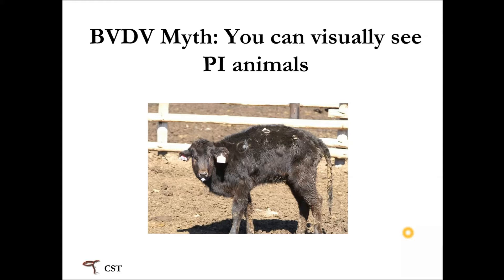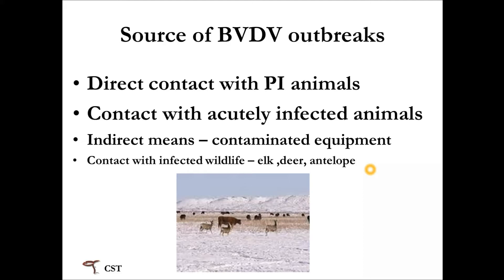One of the biggest myths is that you can visually look at an animal and tell it is PI. The animal shown here was persistently infected, but we very seldom see an animal that looks obviously sick. Most of the time they look perfectly normal, so you cannot visually recognize a PI animal. The most common source and reservoir for BVD is direct contact with the persistently infected animal — that is the main source for transmission among herds and between generations. Transmission can also occur from acutely infected animals, but not nearly to the degree that PI animals transmit it. Indirect means include equipment used when handling calves, and infected wildlife can also spread it to cattle.